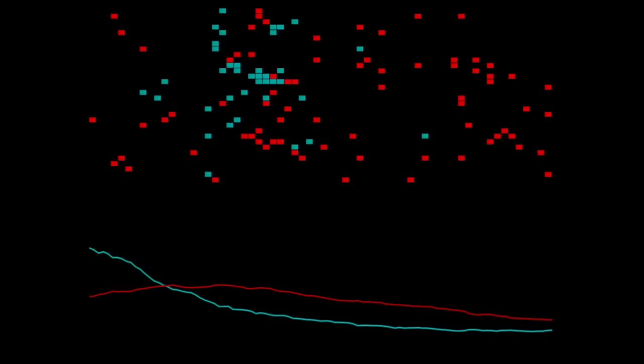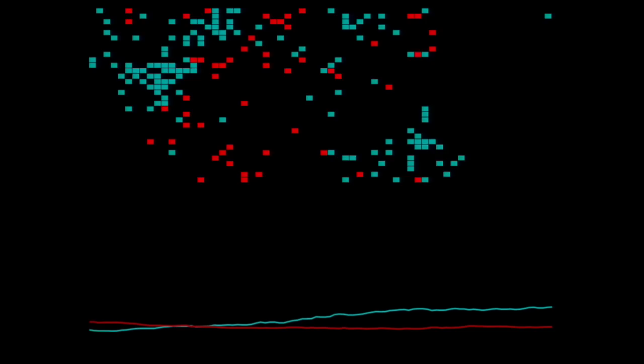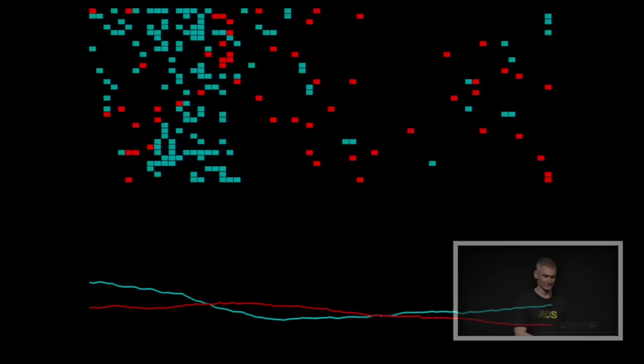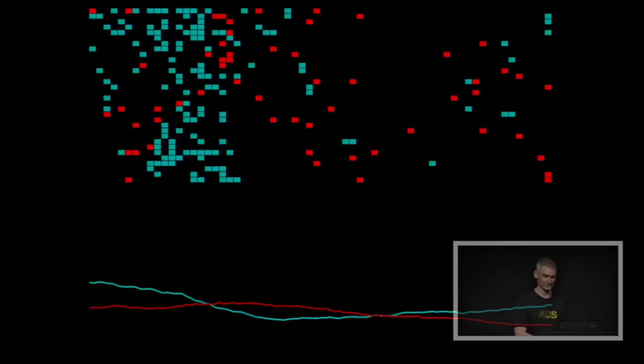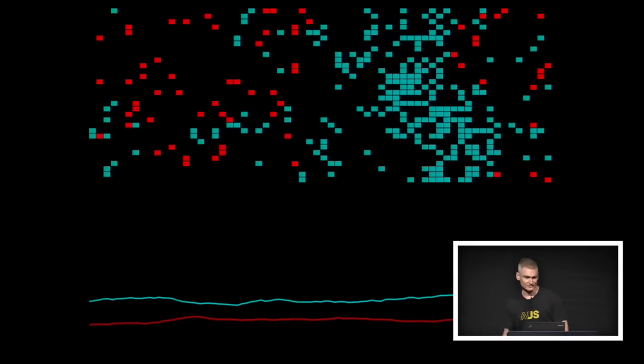What we see here is something that pretty accurately models a real-world predator-prey population base. So the prey population will boost up, the predators will follow, they'll eat out the prey, and then the predator population will crash. Again, this is a really simple set of rules. It creates some kind of complex and almost real-world result.